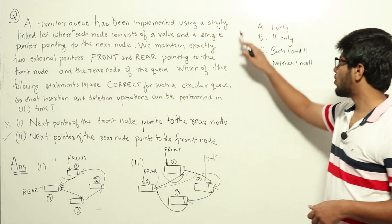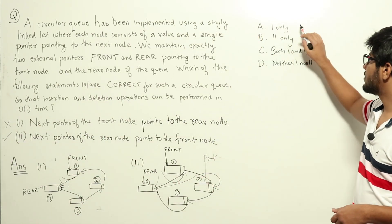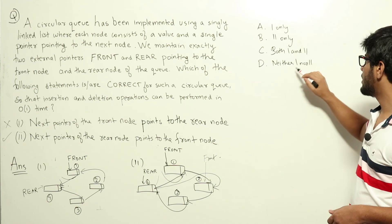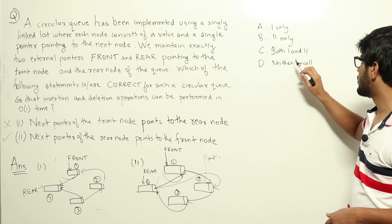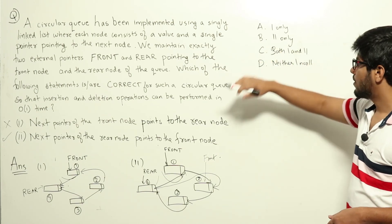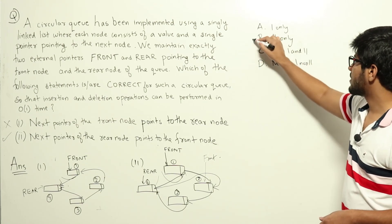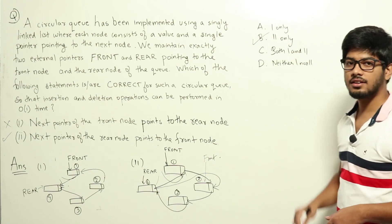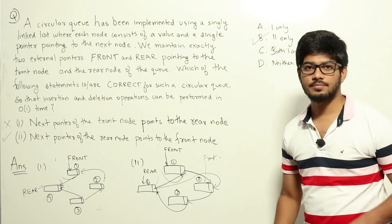There were four options given: one only, two only, both one and two, or neither one nor two. Since only statement 2 satisfies the requirement that insertion and deletion can both be performed in O(1) time, two only — option B — is the correct answer.